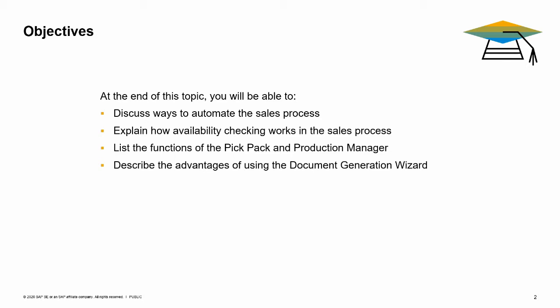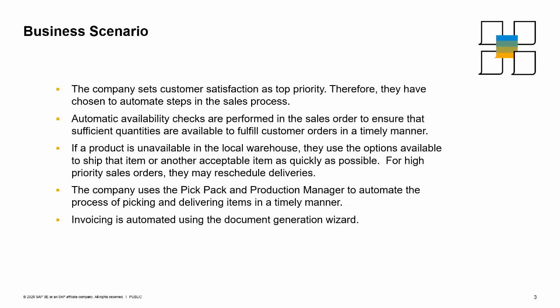We see how automatic availability checking works in the sales process. We will also look at the functions provided by the pick-pack and production manager and how they are integrated into the sales process. We discuss the advantage of using the document generation wizard.